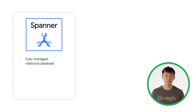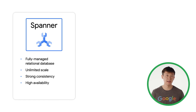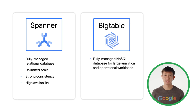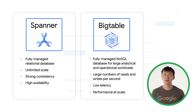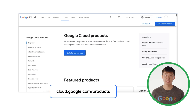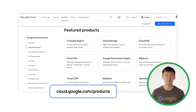While we covered a few key storage and database options, there are many more that you may want to explore. Cloud Spanner is a fully managed relational database with unlimited scale, strong consistency, and up to 99.999% availability. It's been used in industries like gaming, fintech, healthcare, retail, tech, and media. Cloud Bigtable is a fully managed NoSQL database designed to support large analytical and operational workloads, optimized for applications that require large numbers of reads and writes per second, low latency, and performance at scale. To learn more, visit cloud.google.com/products.